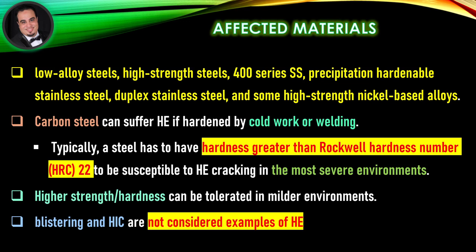Carbon steel can suffer hydrogen embrittlement if hardened by cold work or welding. Typically, a steel has to have a hardness greater than Rockwell hardness number HRC 22 to be susceptible to hydrogen embrittlement cracking in the most severe environments.